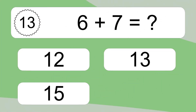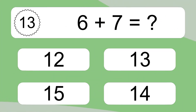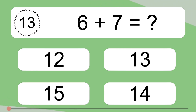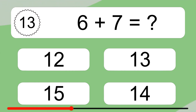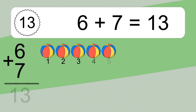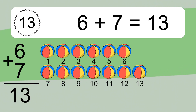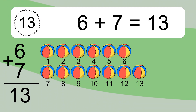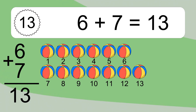6 plus 7 equals what? 6 plus 7 equals 13. Let's count it. 1, 2, 3, 4, 5, 6, 7, 8, 9, 10, 11, 12, 13.